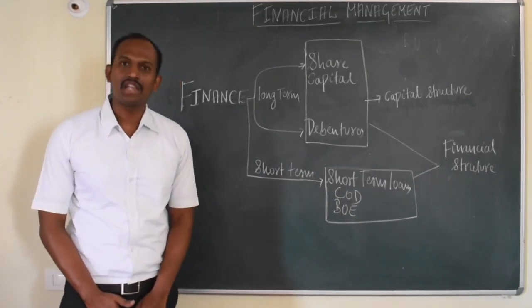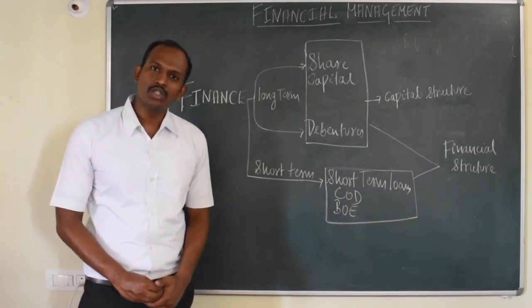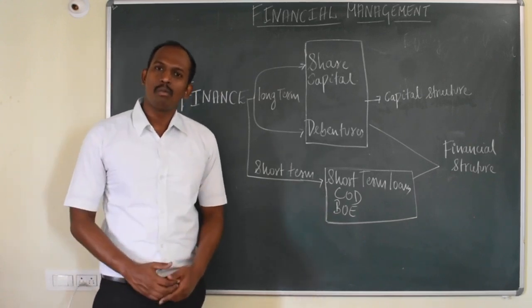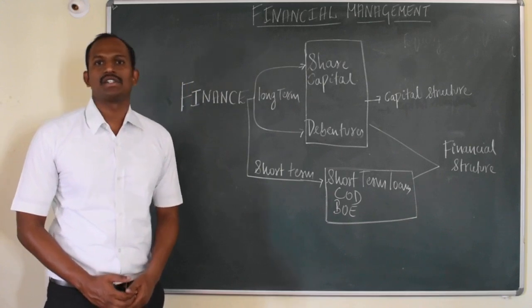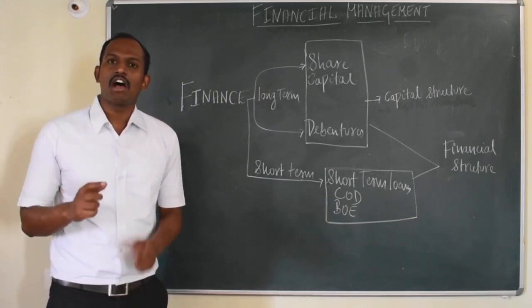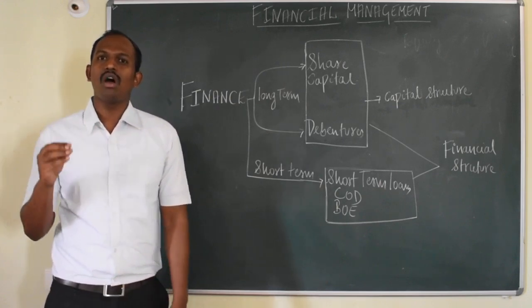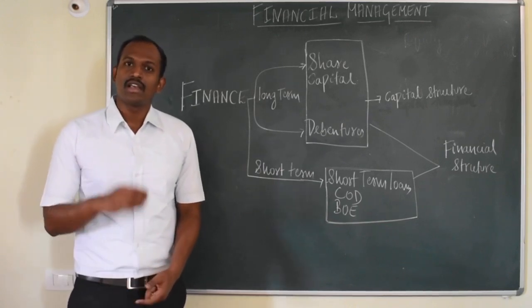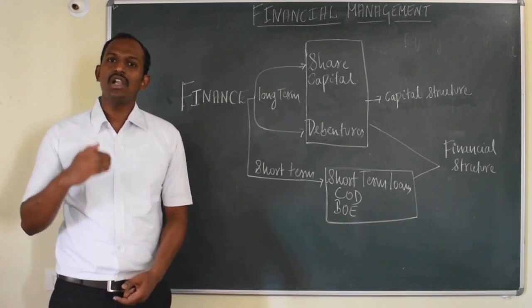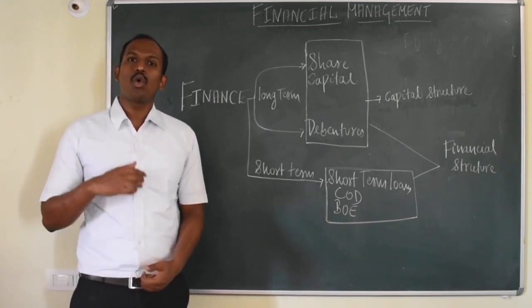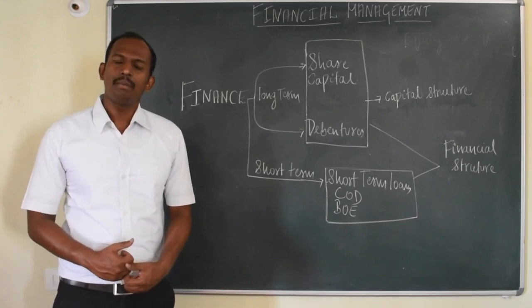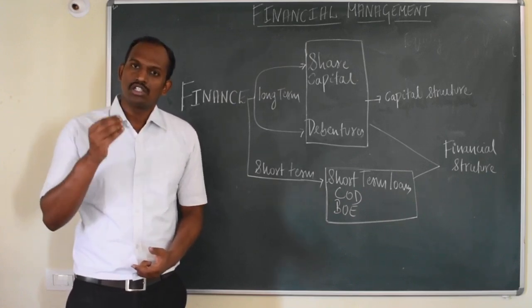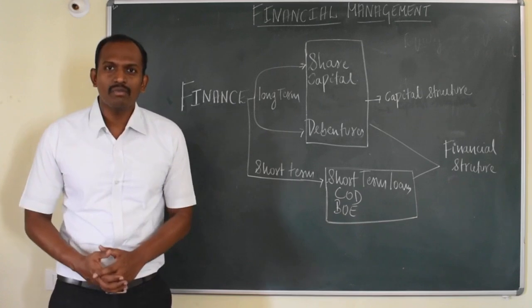Capital structure deals with long-term sources of funds only. Financial structure, on the other hand, includes both long-term and short-term sources of funds. Capital structure is a part of financial structure. Optimum capital structure is a situation where the cost of capital is low and the value of the firm is maximum.